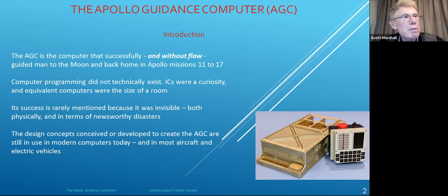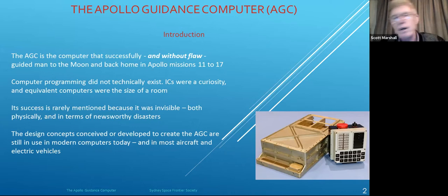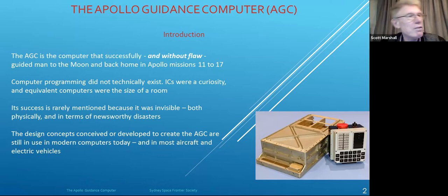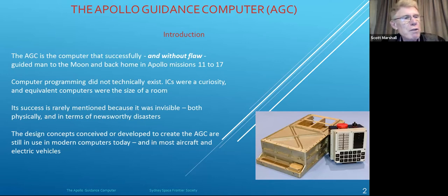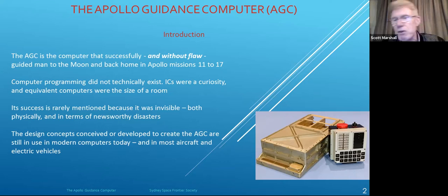Computing concepts we take for granted today were either created or refined during the AGC's design and development. For the first time, lives were in the hands of a computer. There was no direct IT support, no replacement parts, and no tolerance for failure. The AGC program had to manage all foreseen eventualities and be flexible enough to manage contingencies and disasters. The AGC was flying to the moon, negotiating gravitational wells, landing on the moon, returning to lunar orbit, and attempting to re-enter Earth's atmosphere with very little room for error.